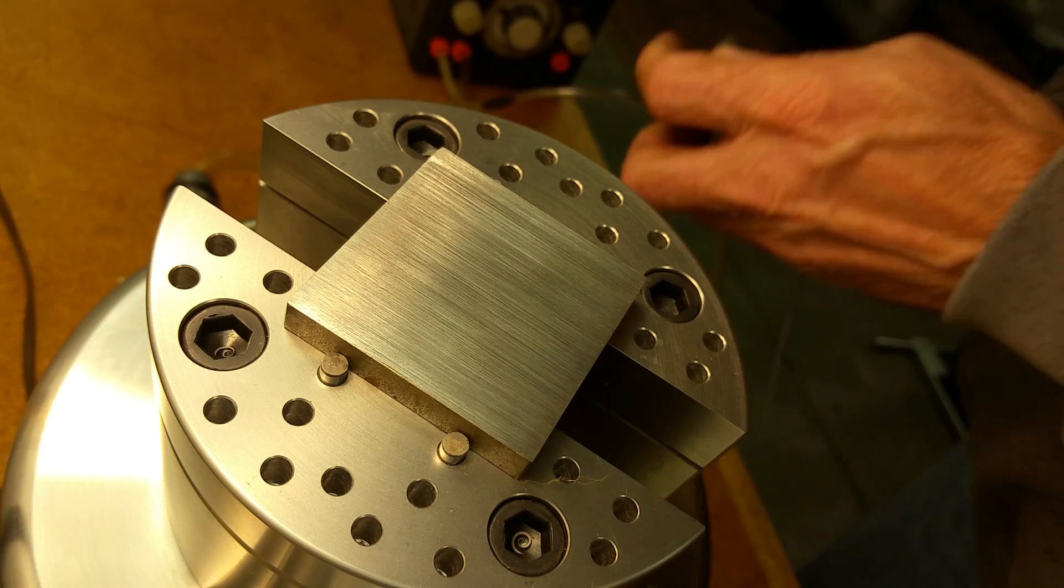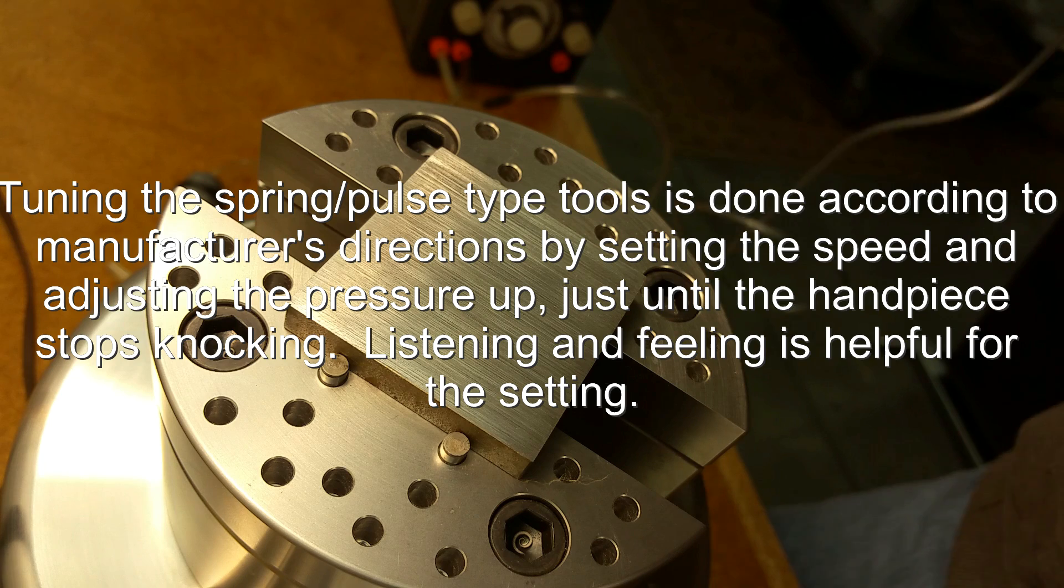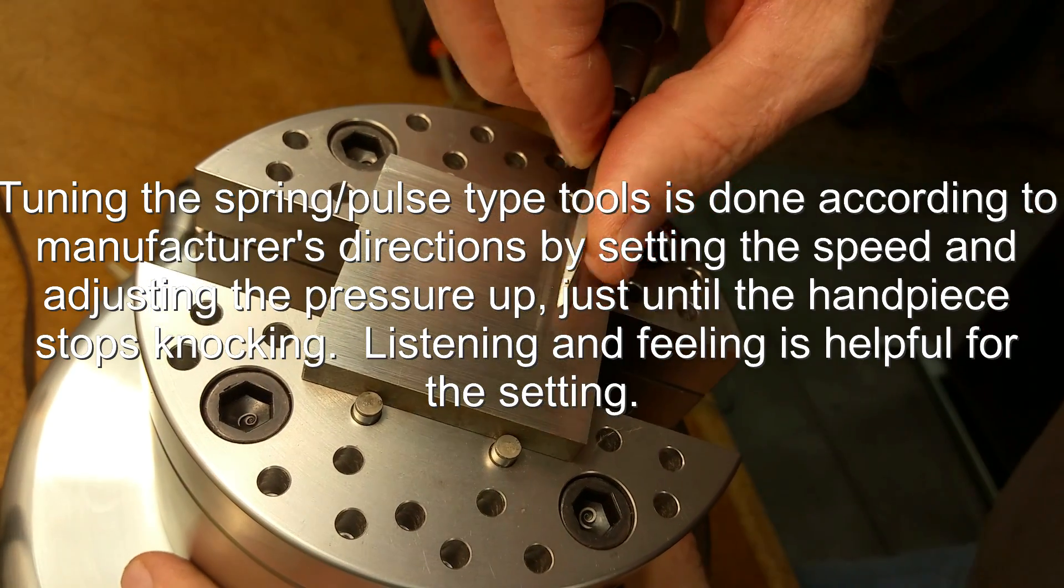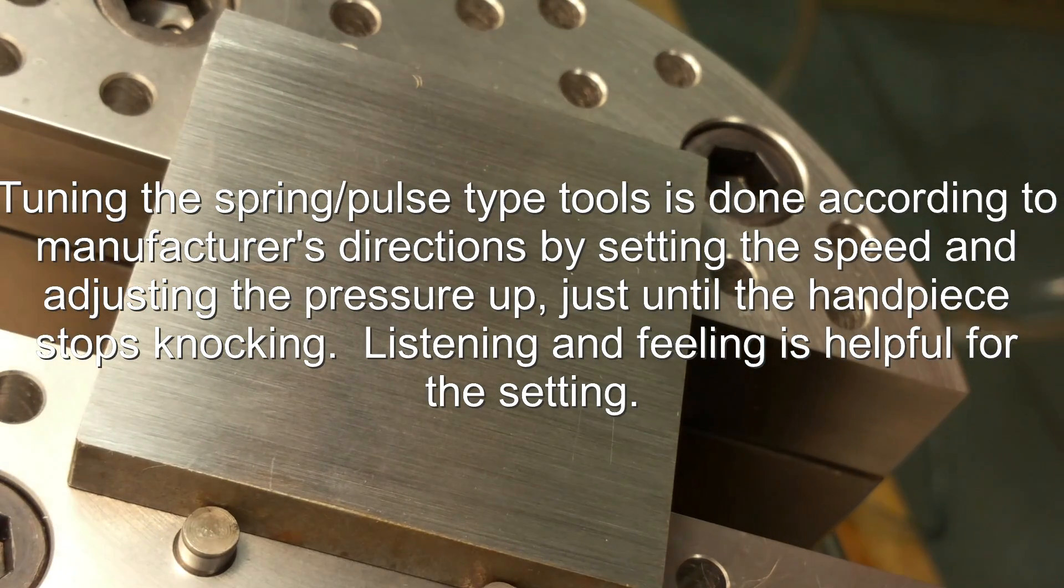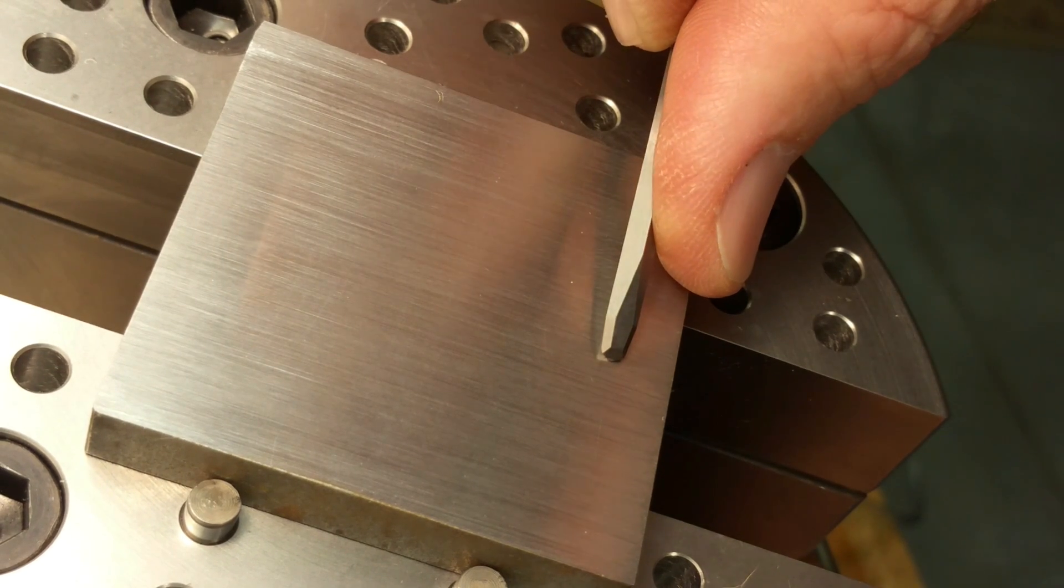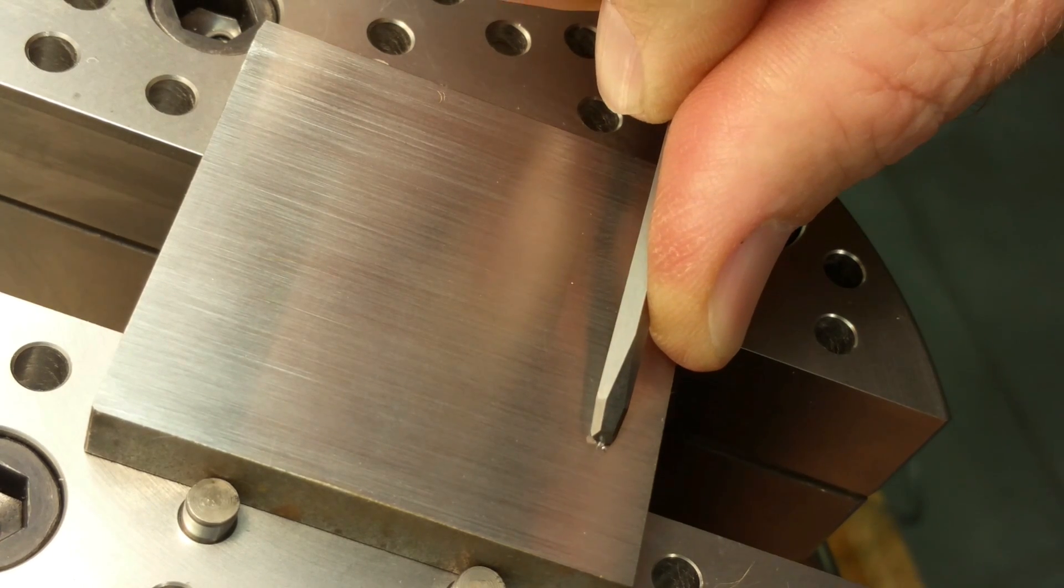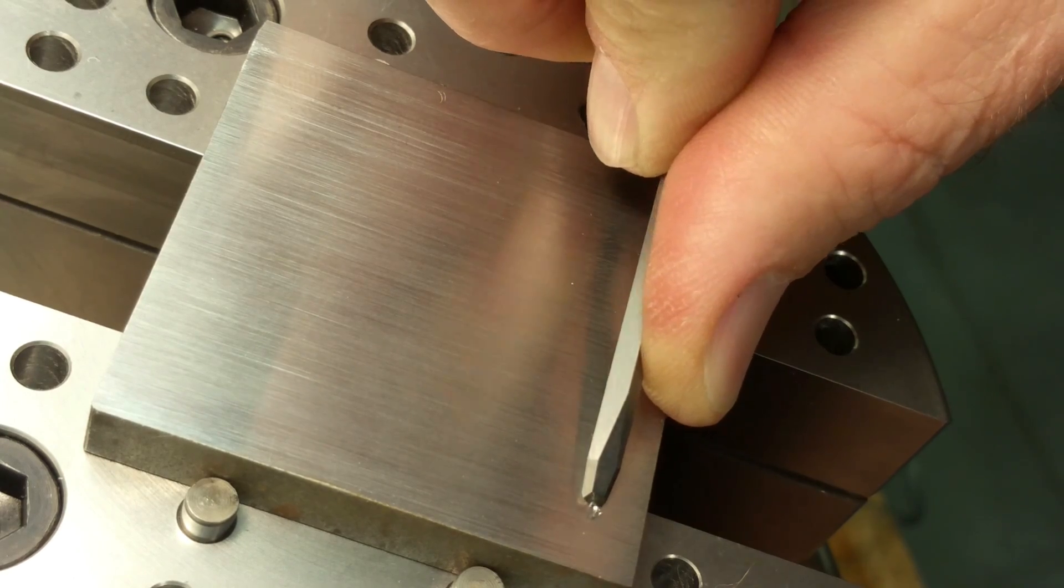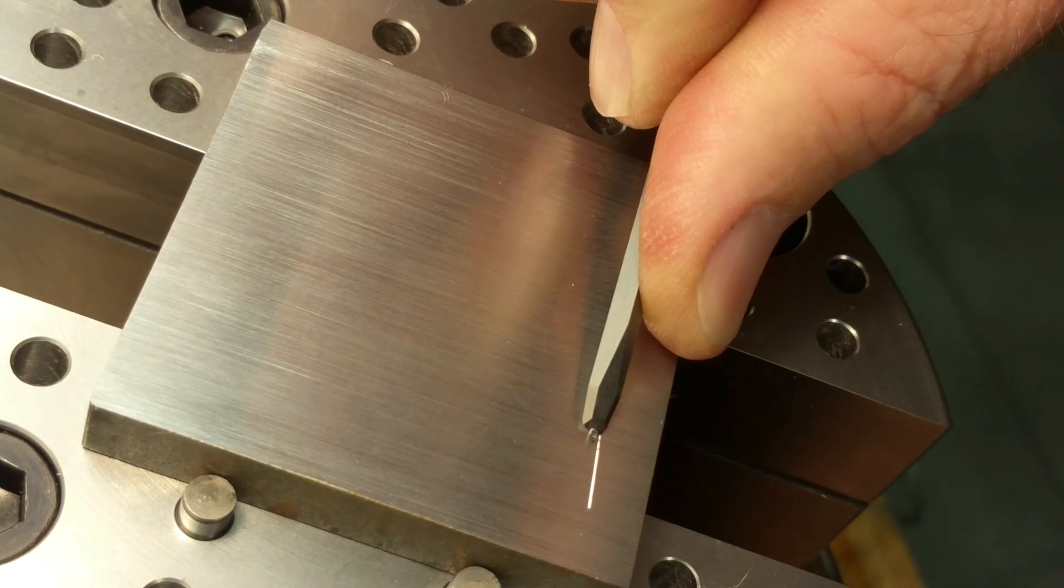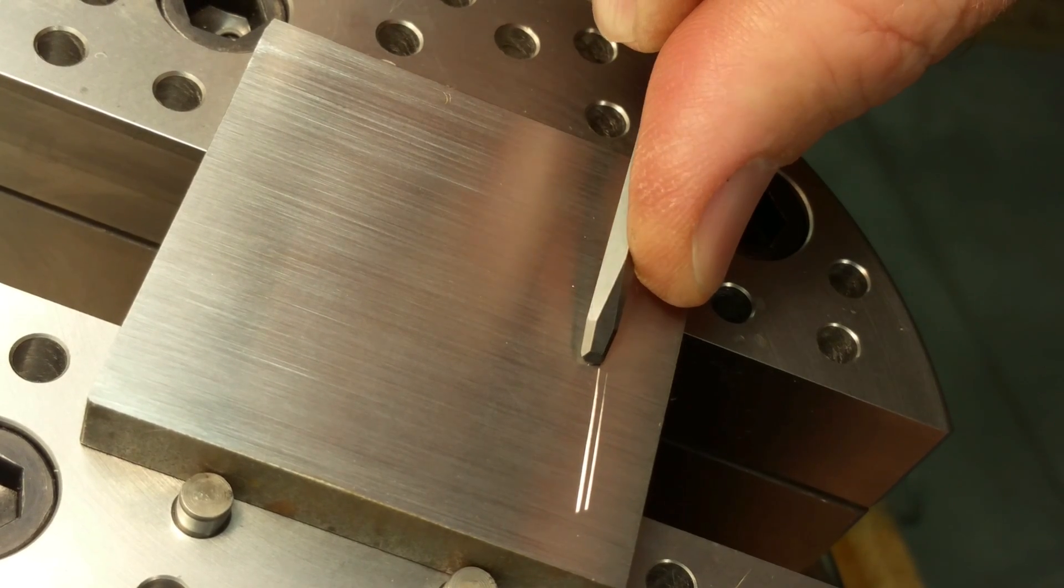So first we'll try the Monarch. I'll try to zoom in a little bit. I'll try a light cut first, and then a heavier cut. And I'll just go ahead and floor it and see what we get.